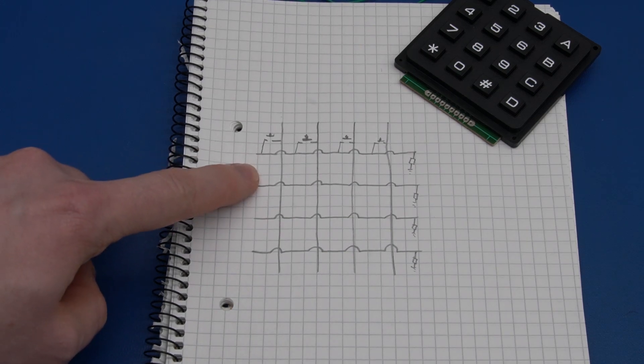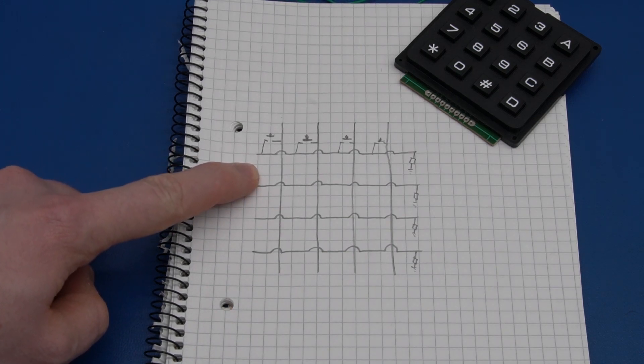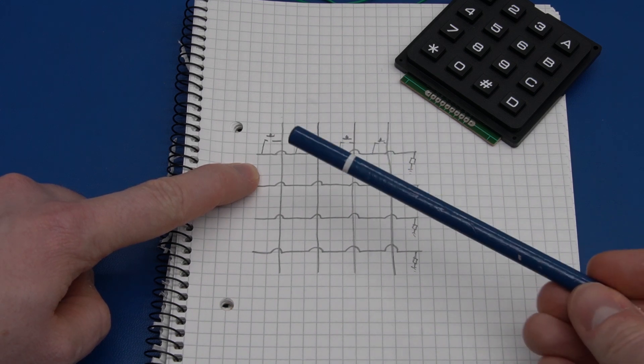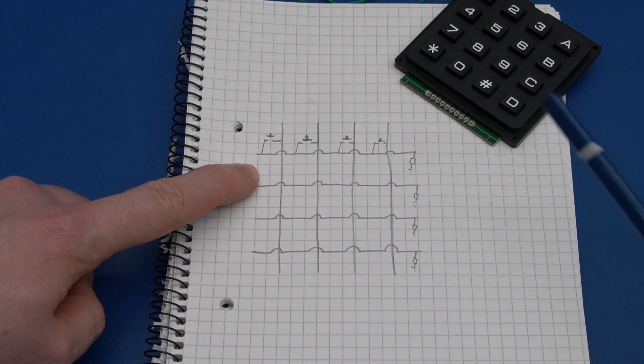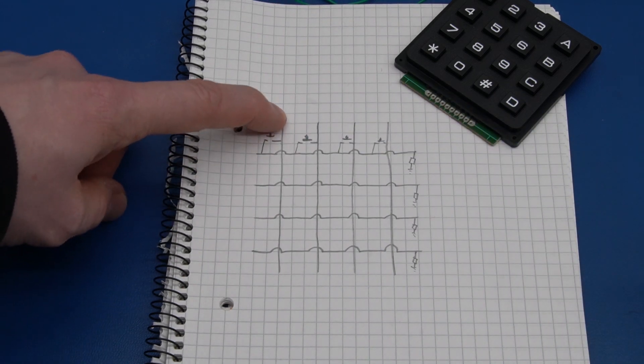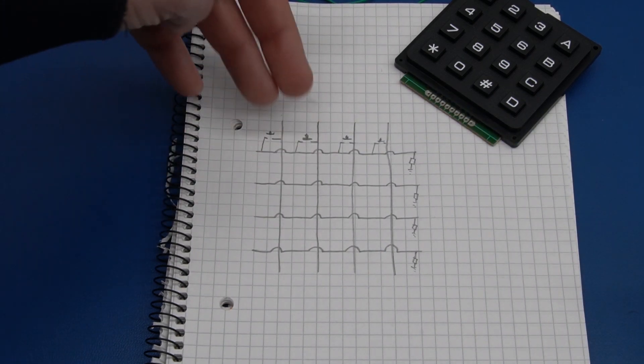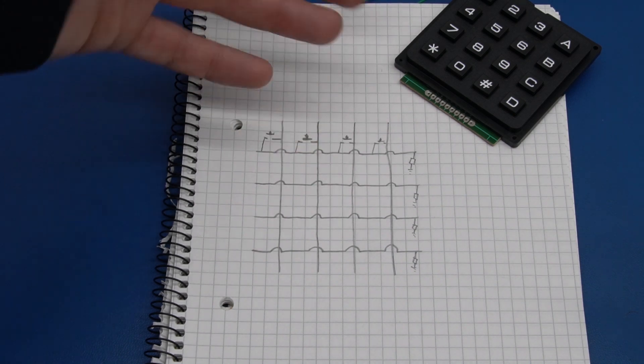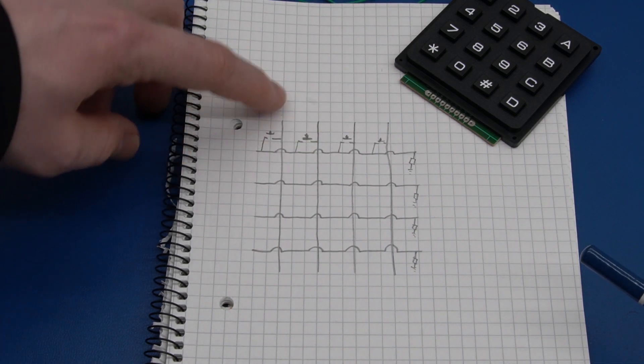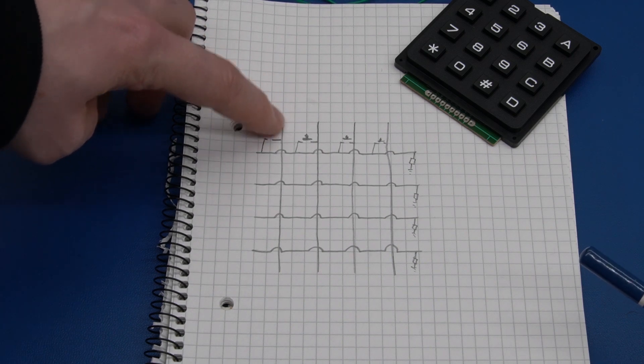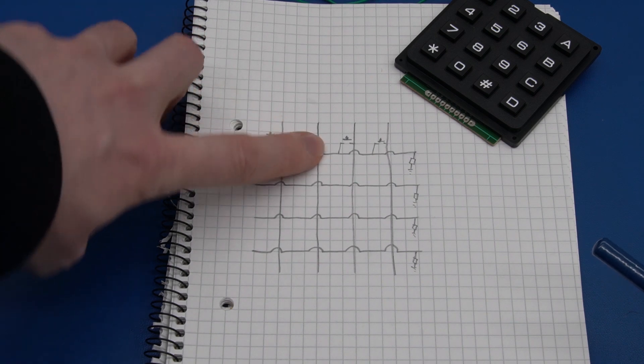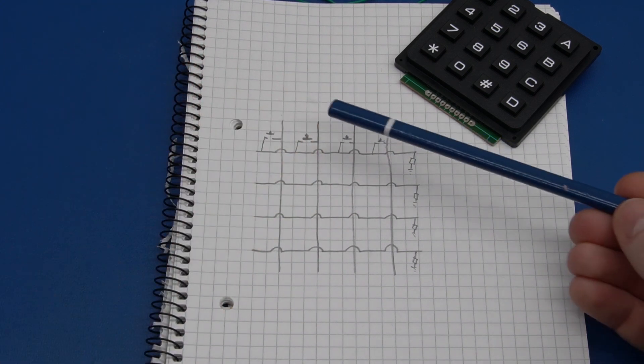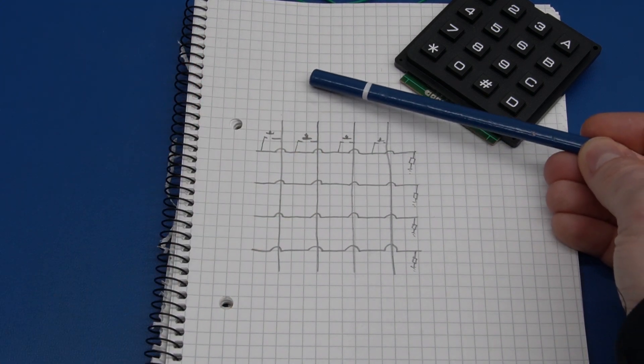There's also another thing we have to keep in mind. We cannot simply leave these as outputs because if we set the first one high and the next one low and we press these two buttons at the same time, by mistake, it could happen, then we will send a current in through here. It will go through the switch, through the switch and it can go to ground through this low here, if that's an output.